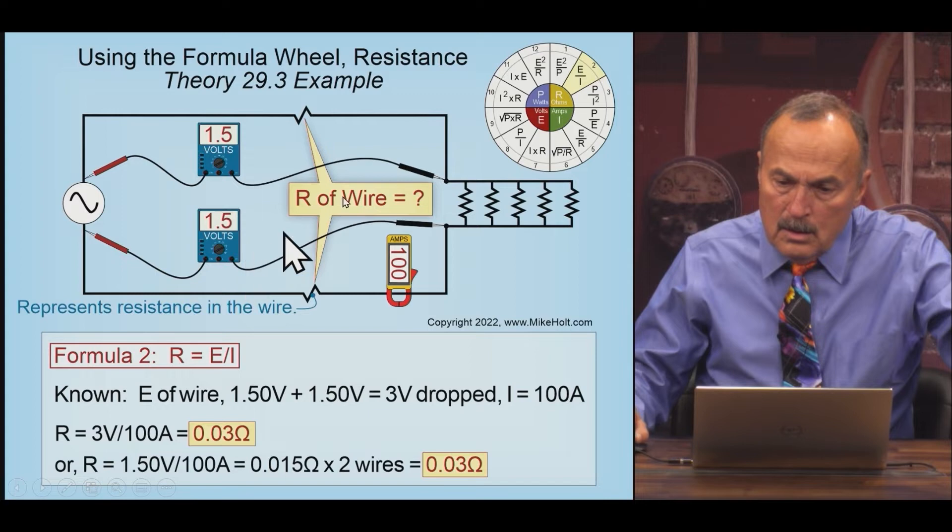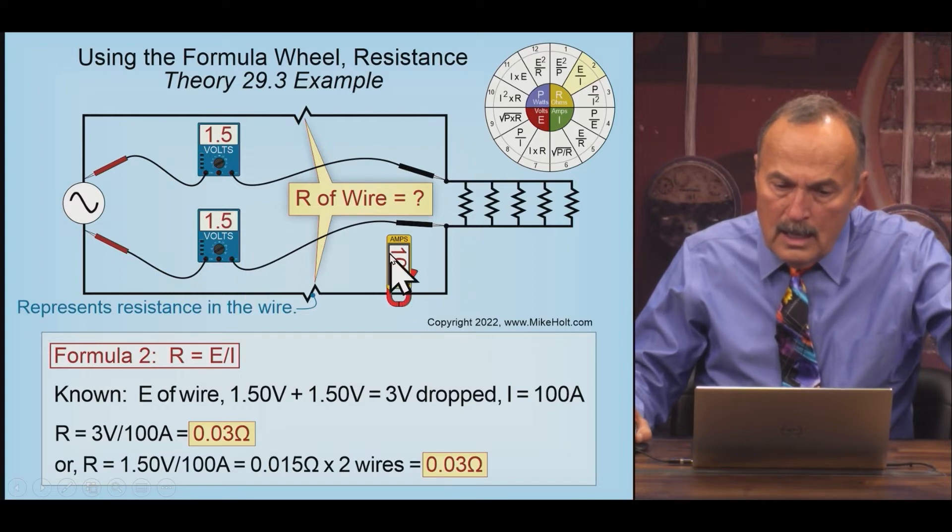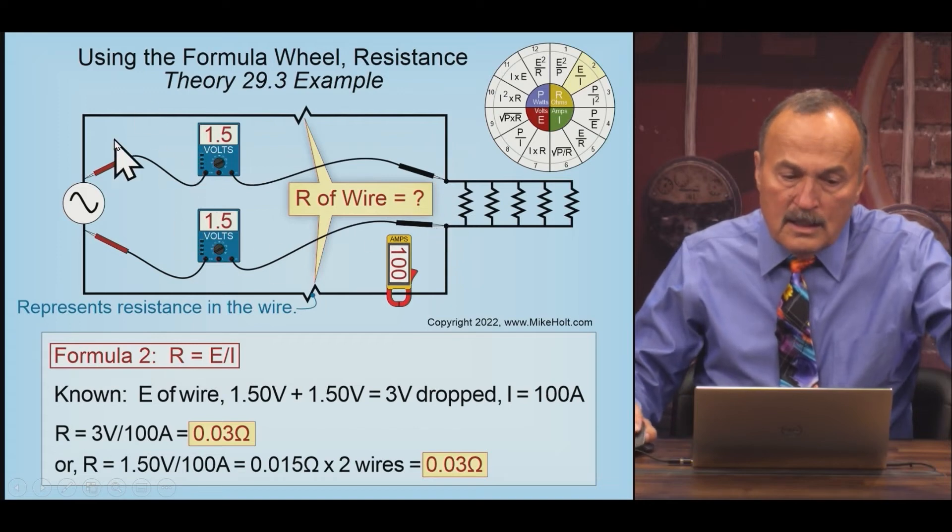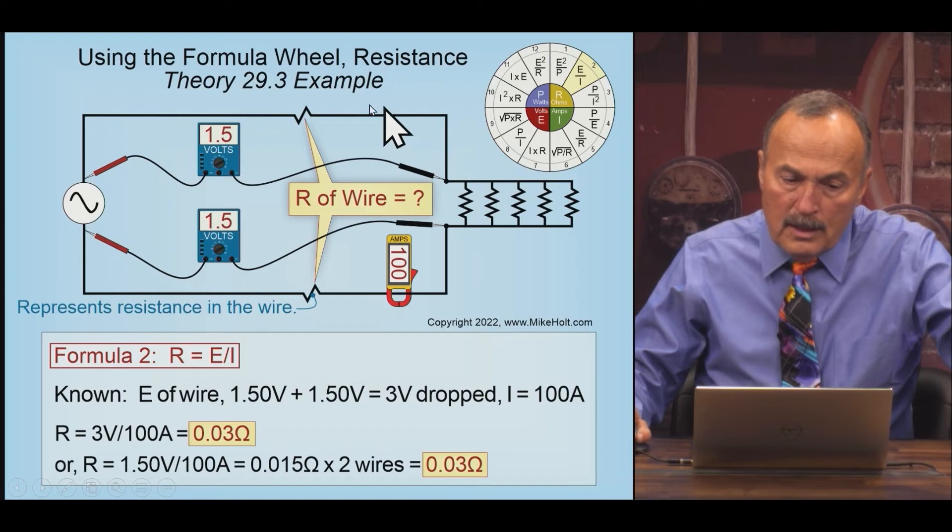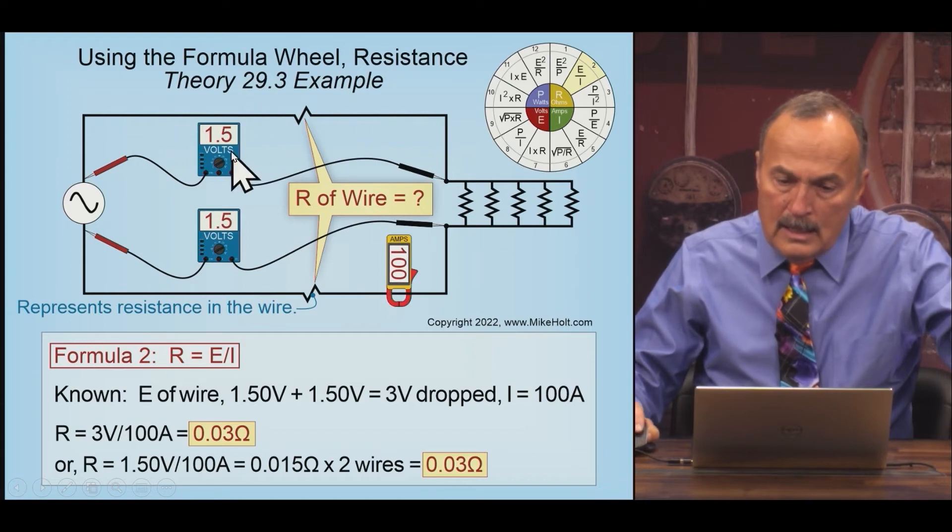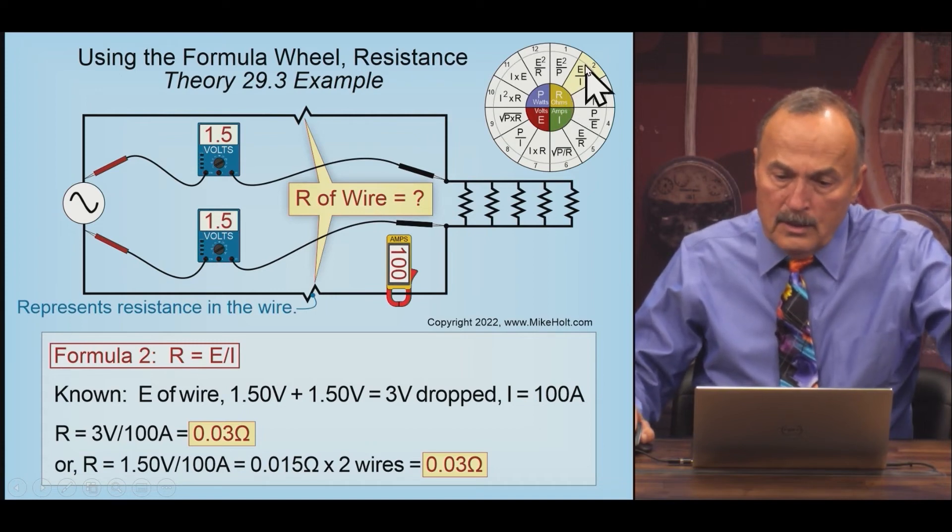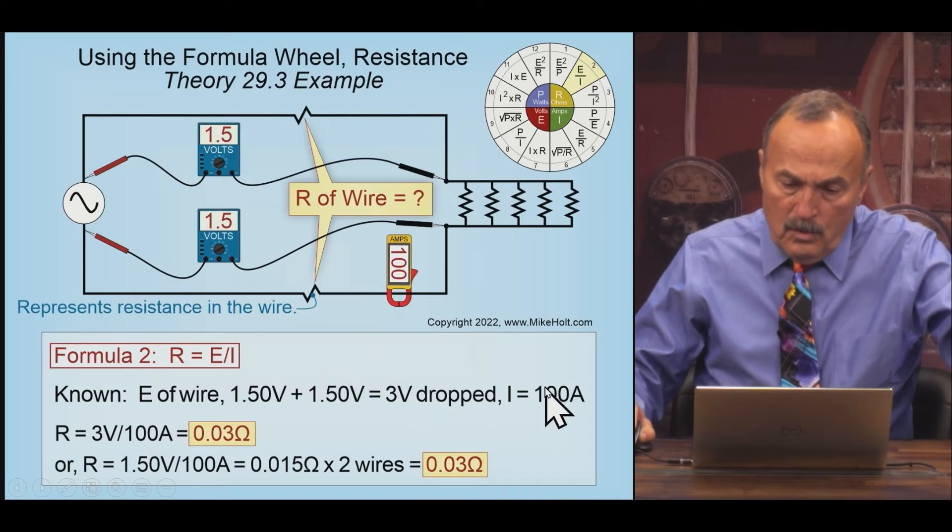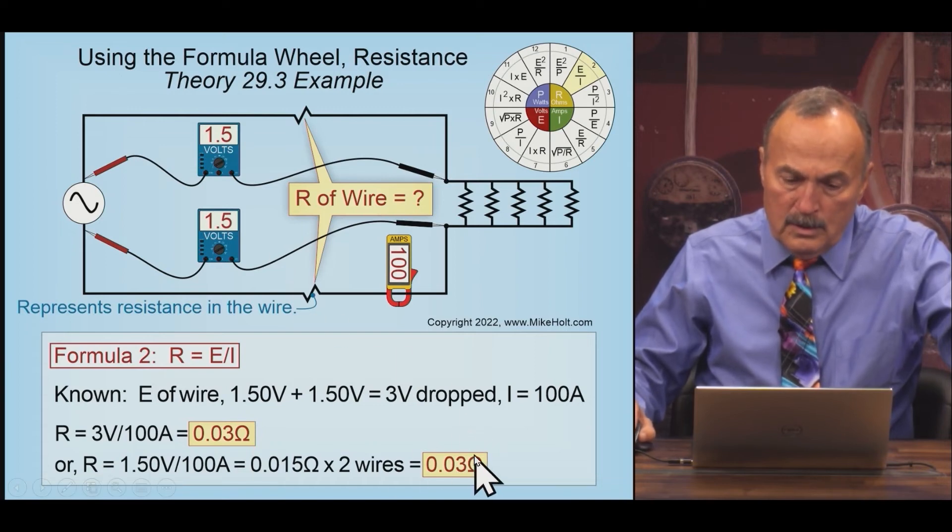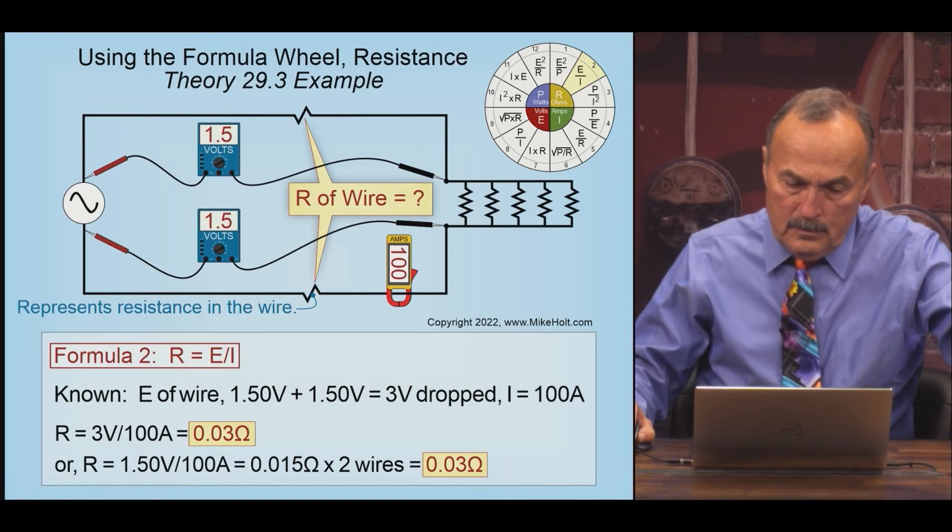I know I and I know E, the voltage. This is the voltage drop of the wire right here, from here to here. So I know I and E, and I'm looking for R. I and E is number two. That's going to be E over I: 3 volts over 100 amps is 0.03 ohms for the resistance of both wires. You can also do 0.015 ohms times two. Either way you get the same answer.